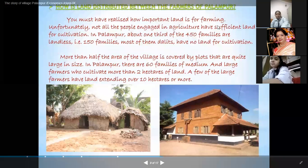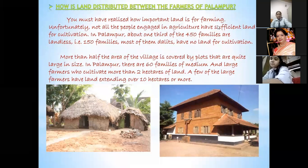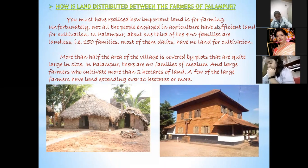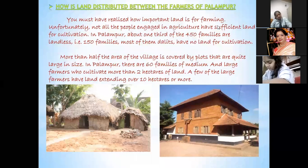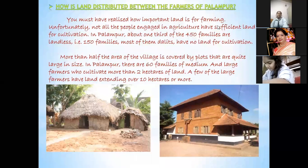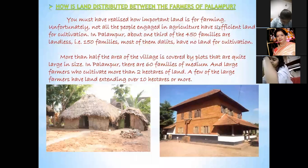Good morning everyone. We are doing Economics Chapter 1, the story of village Palampur. Our topic is how land is distributed between the farmers of Palampur. In this portion we will discuss the distribution of land in Palampur. If you look at picture 1.5 in your NCERT book, you will easily see that in Palampur maximum farmers are having a small size of land.